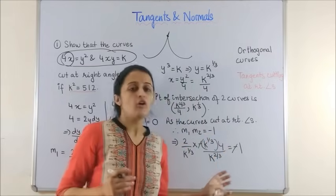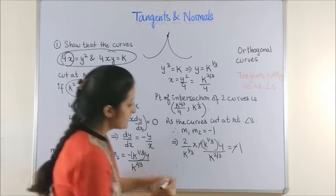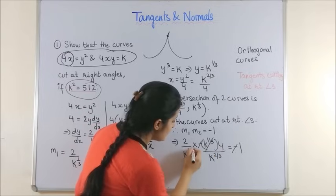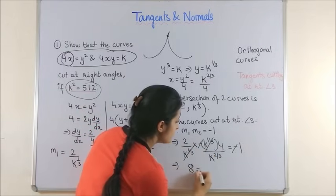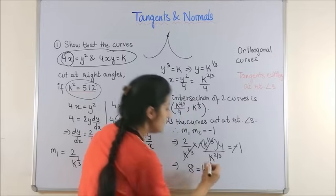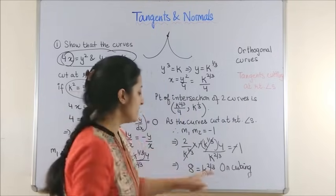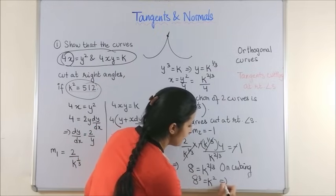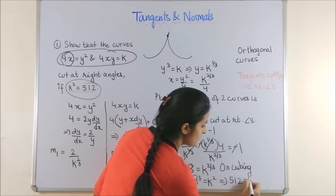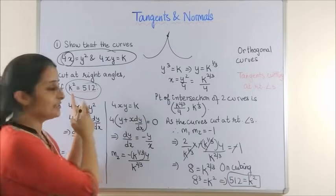All we need to do now is simplify to arrive at the condition. Cancelling k^(1/3) terms gives us 8 = k^(2/3). Cubing both sides, 8³ = k², which is 512 = k². And that's exactly what we wanted to prove.